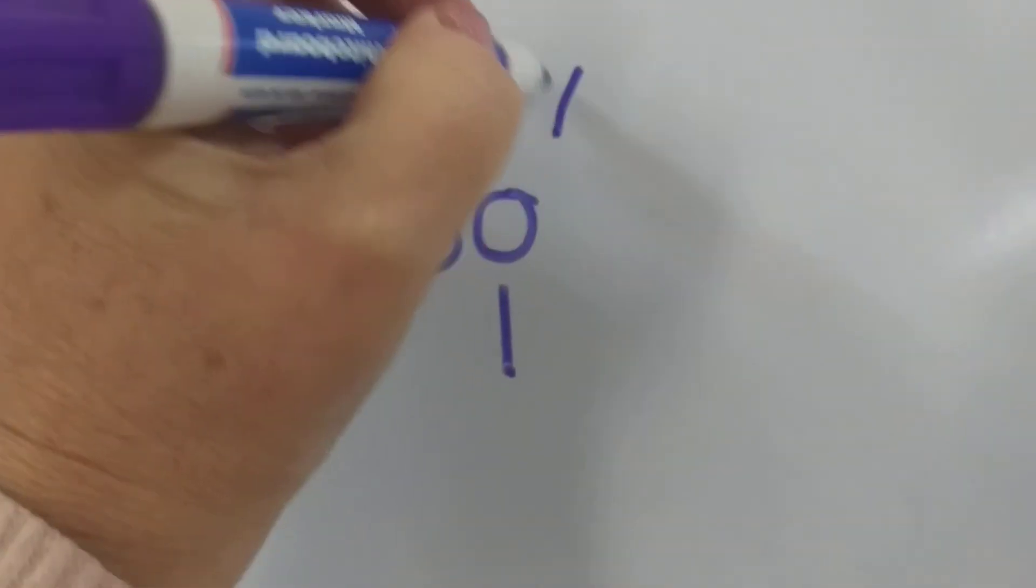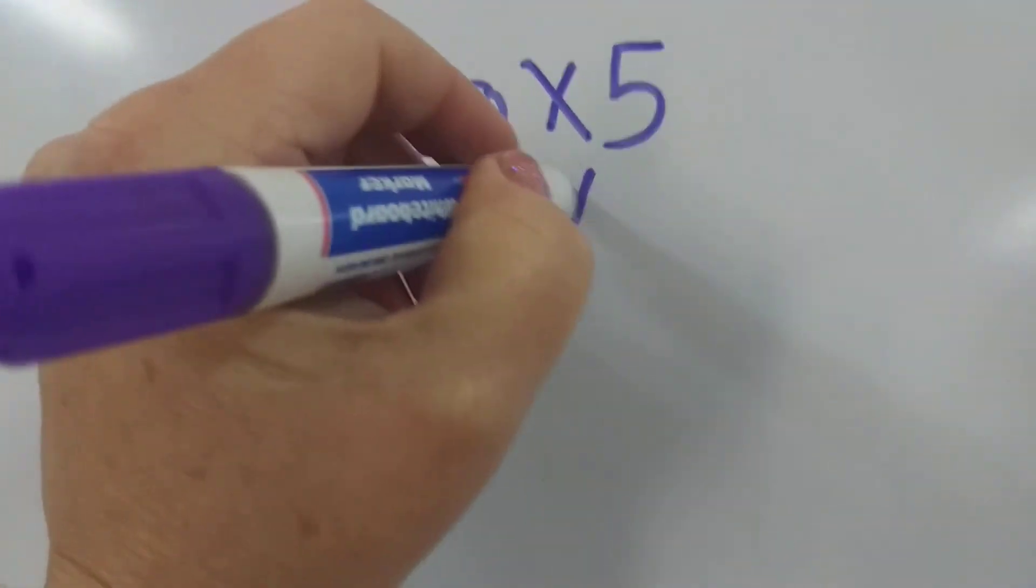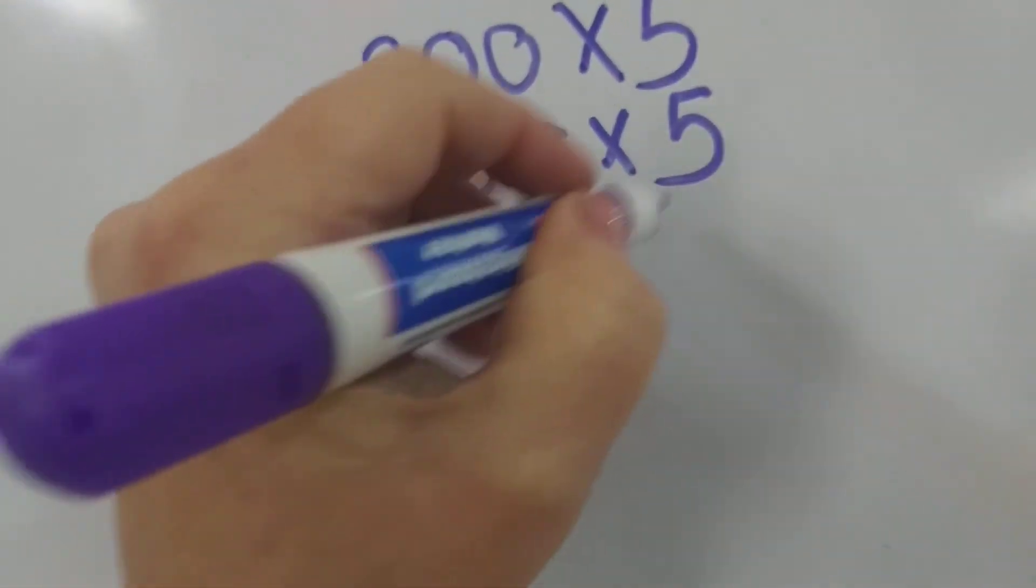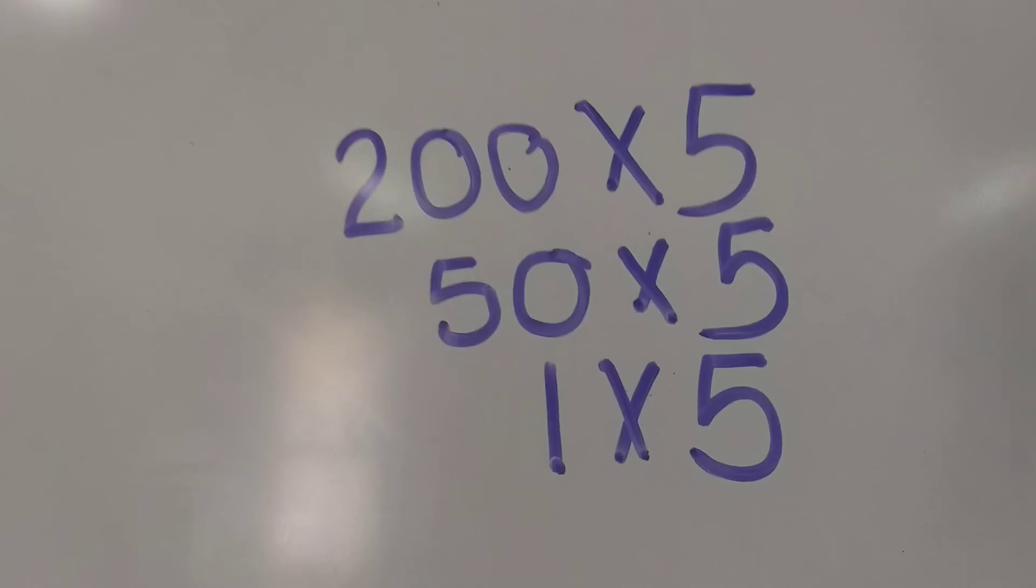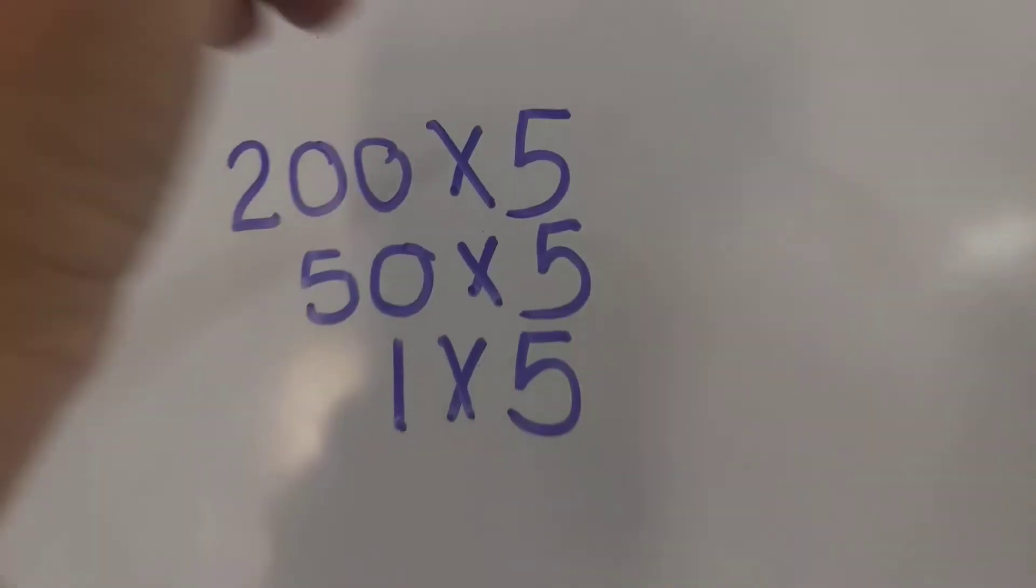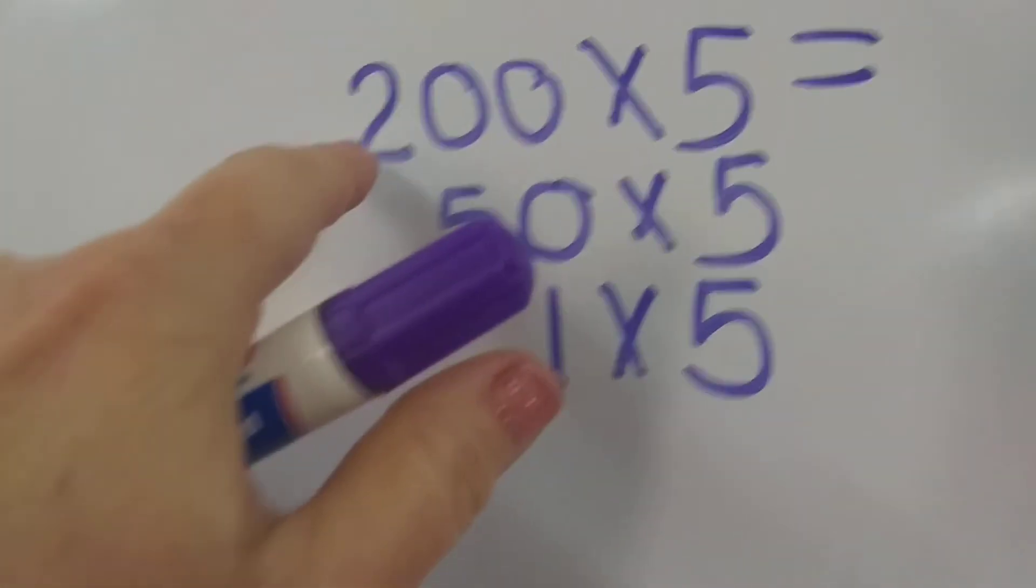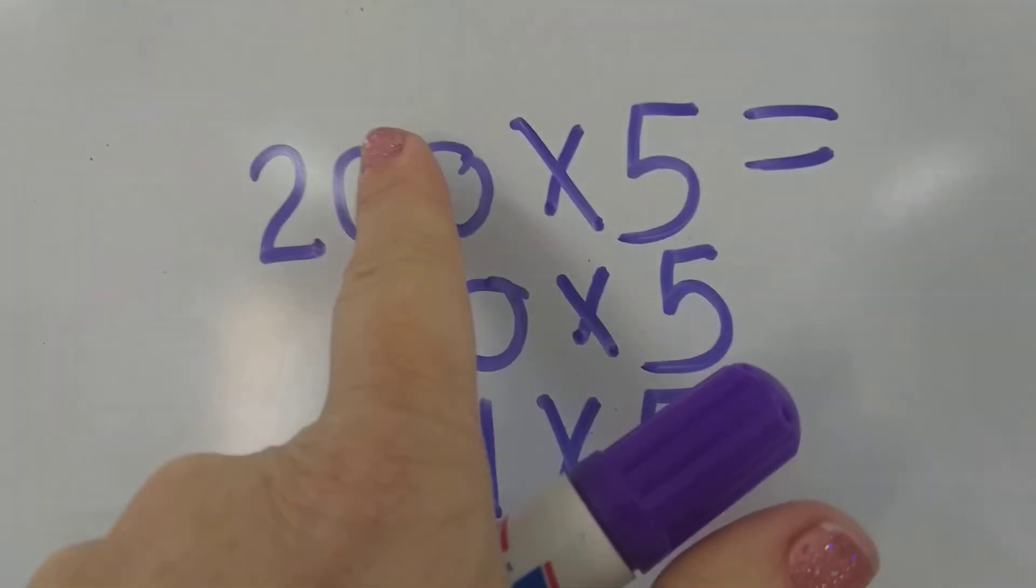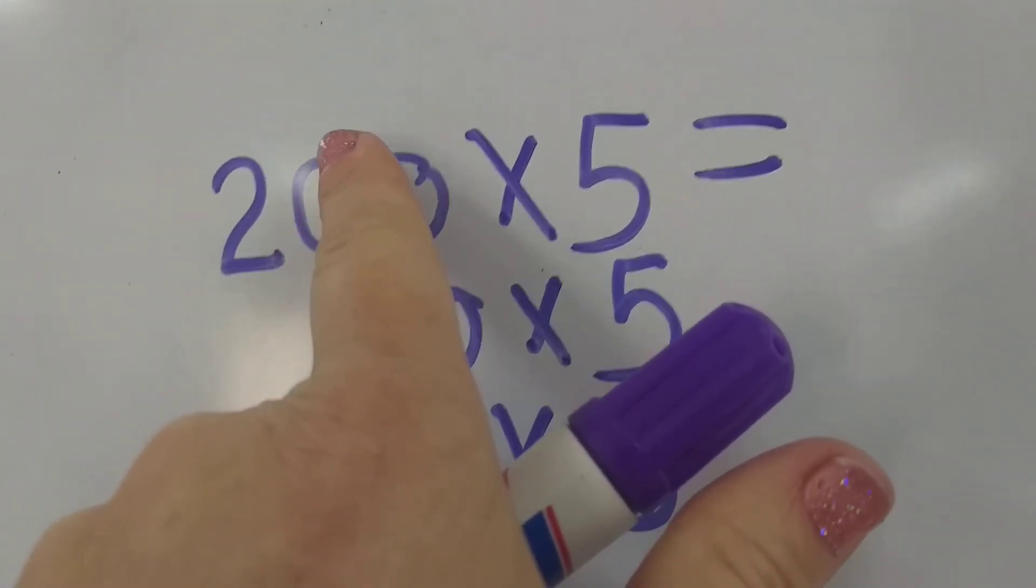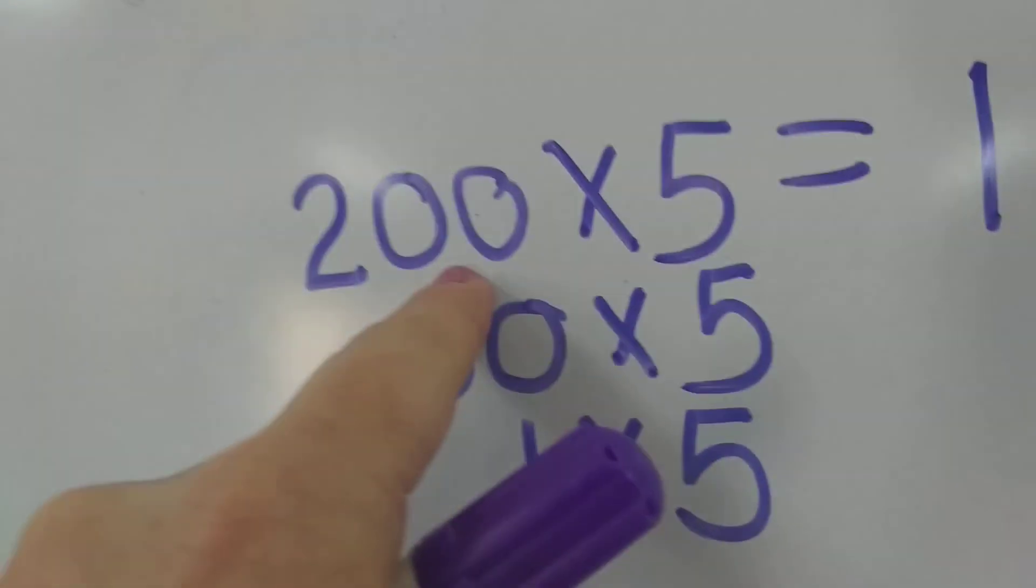So let's just times each one of those by 5. Easy peasy. Now let's give the answers. Cover up the zeros. 2 times 5 is 10. How many zeros are we going to add on? 2.